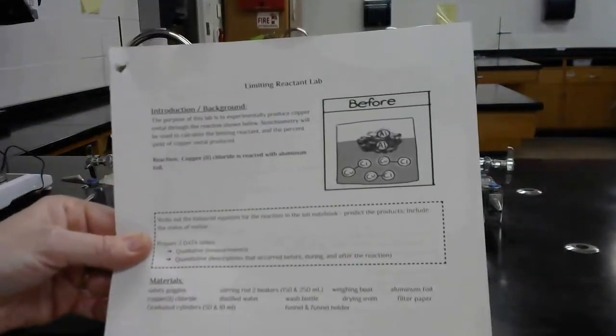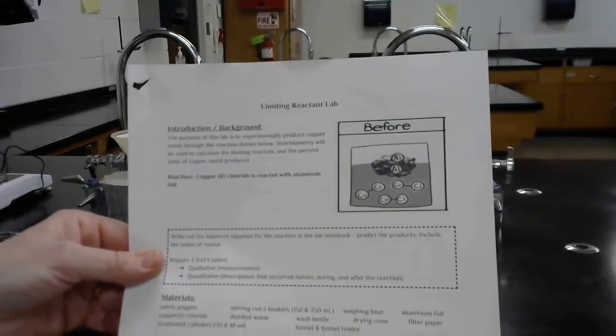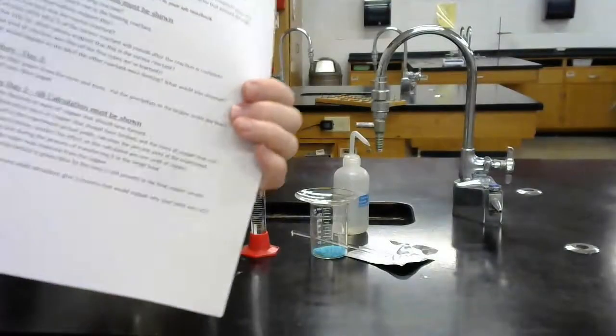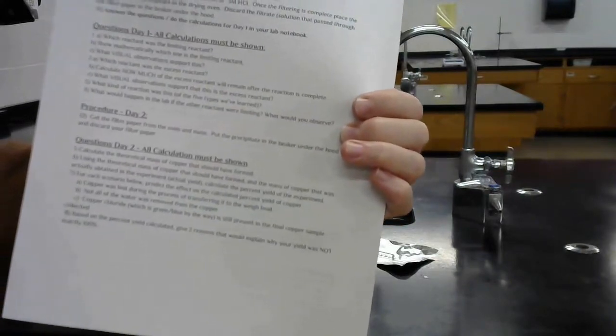Today we're going to do the lab on limiting reactants. This is the one with the copper chloride and the aluminum. When we are done, you should be able to go to the back side and complete the questions for day one and day two.